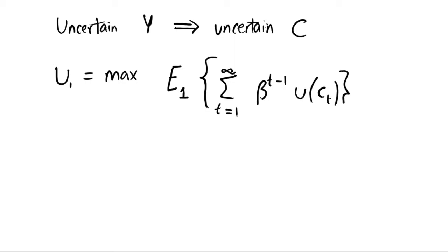So this is our new maximization problem for utility, where we're just uncertain about our income, and thus we're uncertain about consumption, hence why this has to be a maximization in any period beyond period 1.